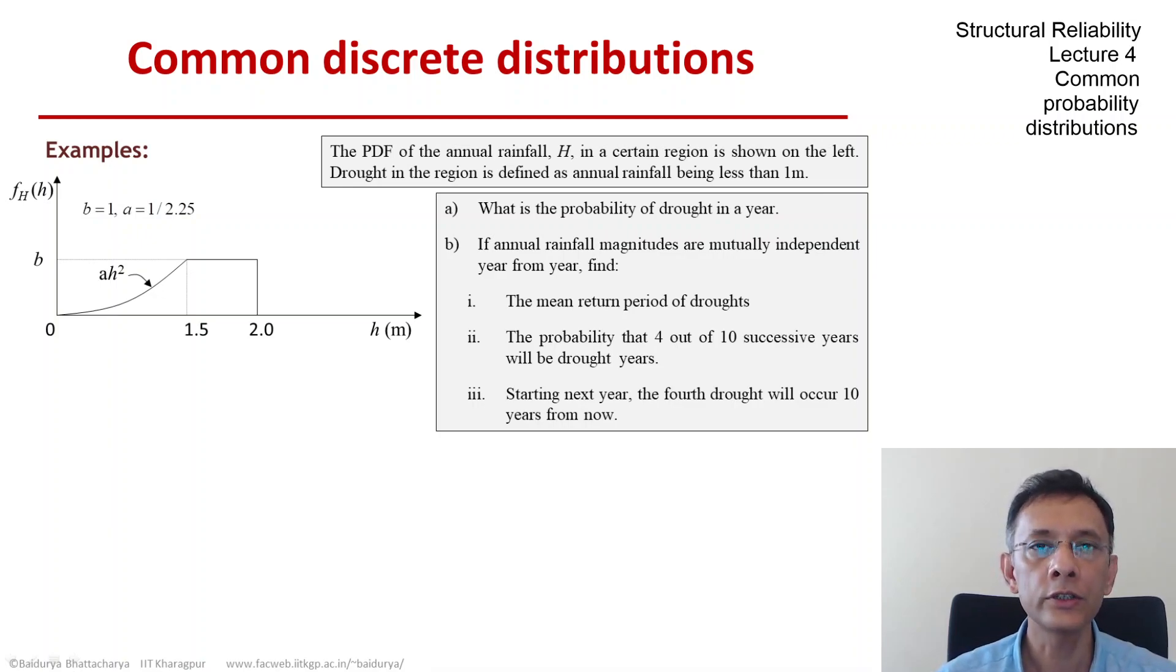We assume that these years and the outcomes year to year constitute an IID Bernoulli trial sequence. With that, we first find the probability of drought in a year by integrating the density function from minus infinity to 1, and that comes to 0.15. So p is 0.15 per year.